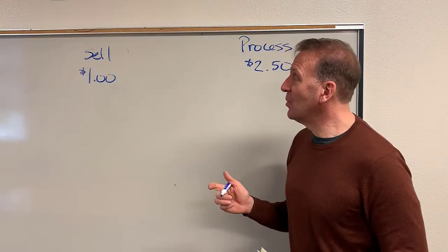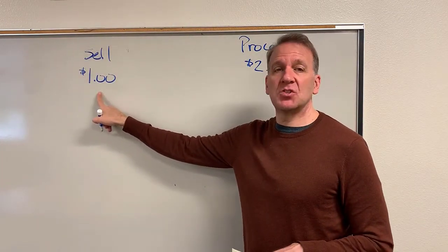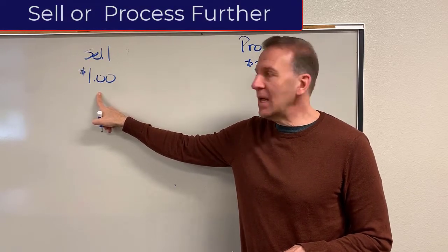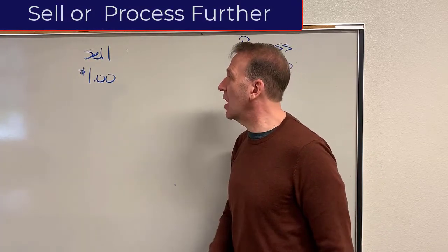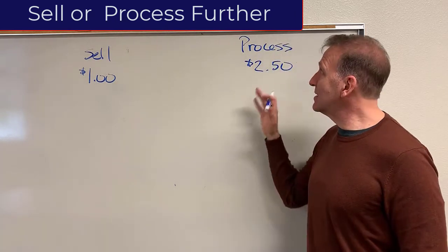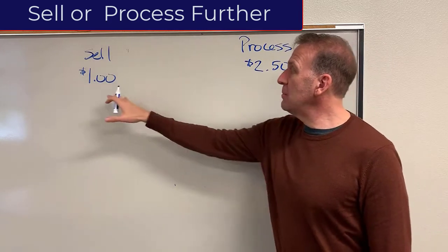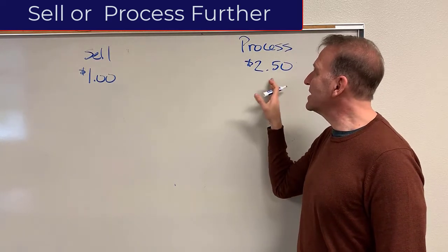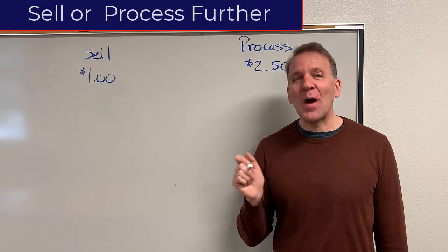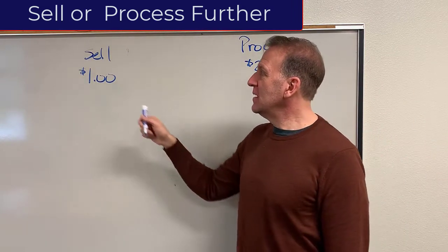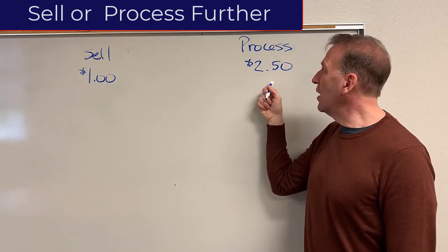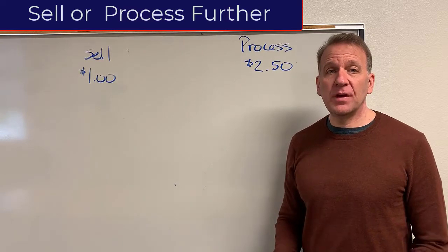In my example that I have on the board, I've got a sales price of a dollar for a can of tomato sauce. So we sell tomato sauce and I can sell it for a dollar, or I can add some more materials and cook it a little bit more with some more ingredients and sell it for $2.50 as spaghetti sauce. So the question is, do I want to sell it for a dollar or do I want to process it more and sell it for $2.50?